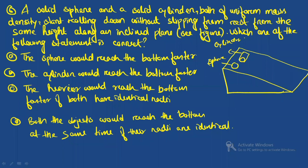Question six: a solid sphere and a solid cylinder, both of uniform mass density, start rolling without slipping from rest from the same height along an inclined plane. Which statement is correct — does the sphere reach the bottom faster, the cylinder, or do they arrive simultaneously?